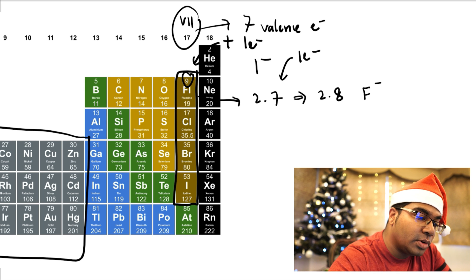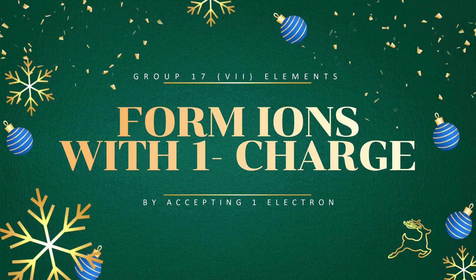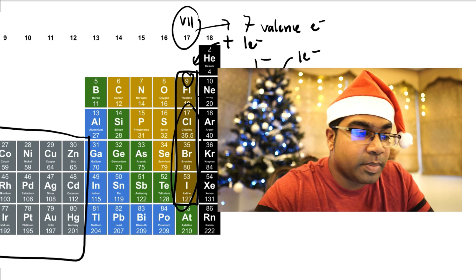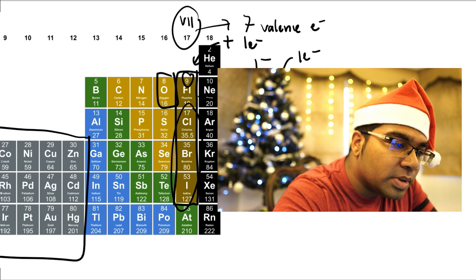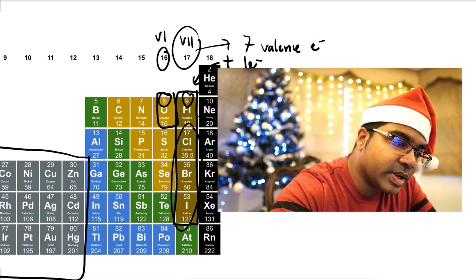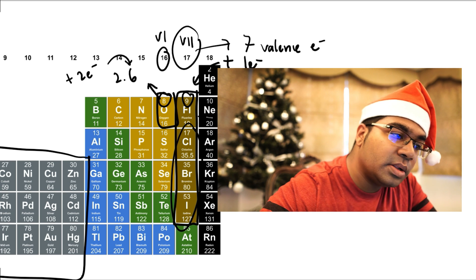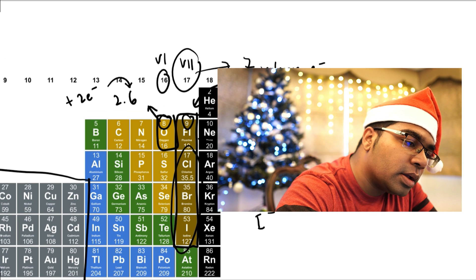So fluorine will be F⁻. The same goes for the other elements in the group as well — chlorine is 1 minus, bromine is 1 minus, and iodine will form a 1 minus ion as well. This can also be applied to oxygen. Oxygen is in group 16 and requires 2 more electrons. Oxygen has an electron arrangement of 2, 6, which means it needs to gain 2 electrons to form a stable octet arrangement, so oxygen will form a 2 minus ion. Whenever electrons are received, a negative charge is achieved; whenever electrons are lost, a positive charge is achieved.